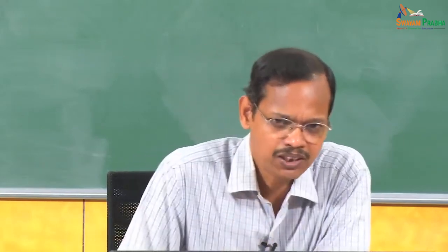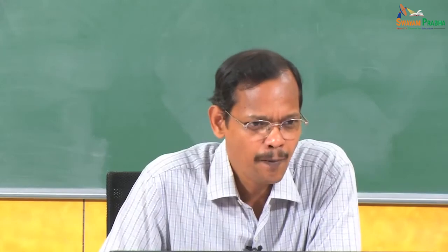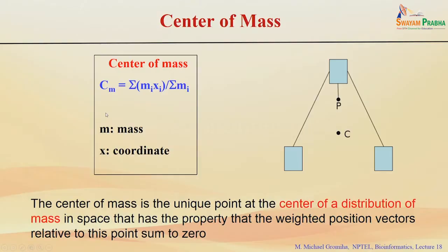One of them is center of mass. What is center of mass? It is the center of distribution of mass in space. It has the property that the weighted position vectors relative to that point sum to zero. For example, if you have three different objects, you can see the center of mass is located at position C.